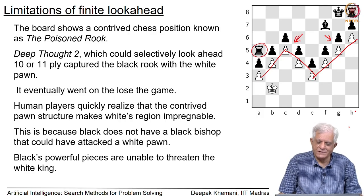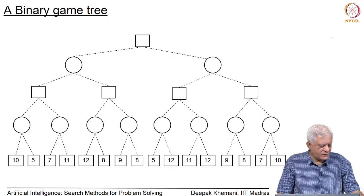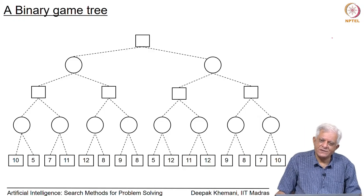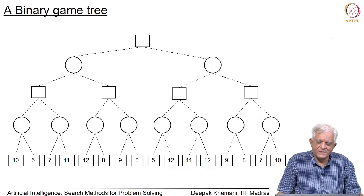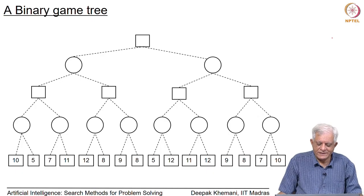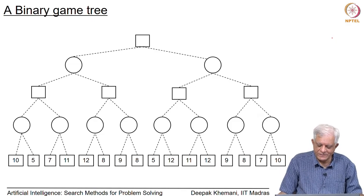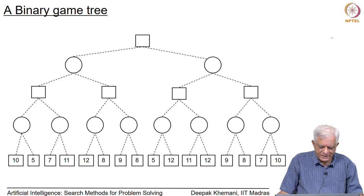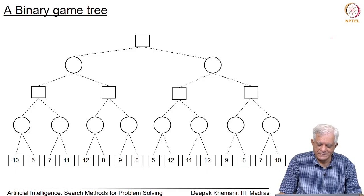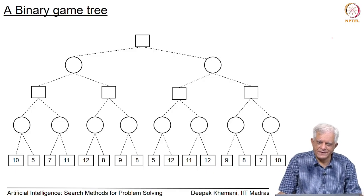In the next class we will start looking at how to analyze game trees with a finite look-ahead. Here we have a small game tree where each player has 2 choices at every stage, and we are doing a 4-ply look-ahead, with the evaluation function applied to the leaves at the bottom. We will take this up in the next session.